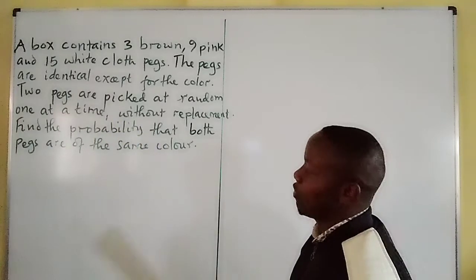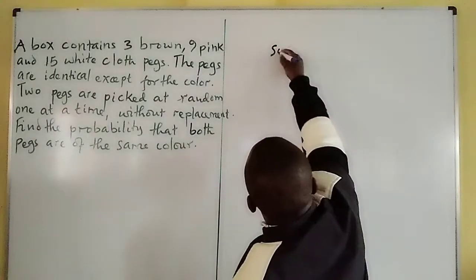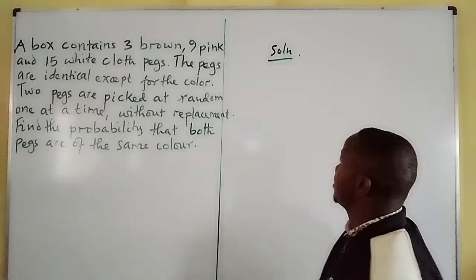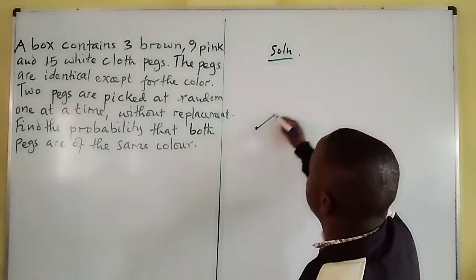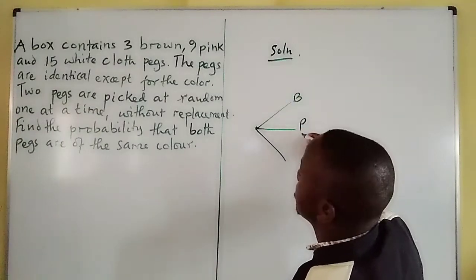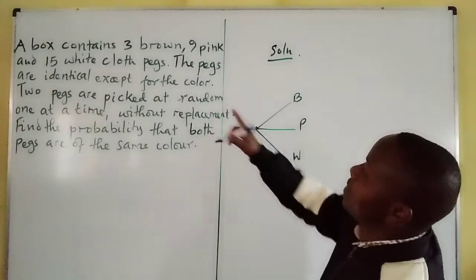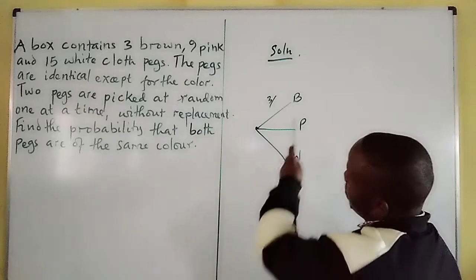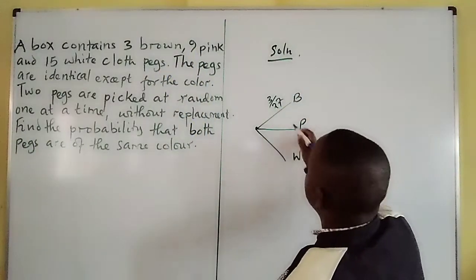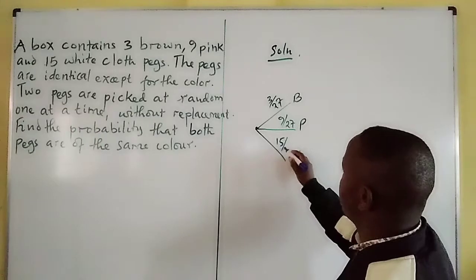We need to find the probability that both pegs are the same color. The first thing we'll do is come up with a tree diagram, which is a simplified format of outlining all the possible outcomes. The box contains brown, pink, and white pegs. Starting with brown — there are three — so the probability of picking a brown one is 3 out of 27. Picking pink is 9 out of 27, and picking white is 15 out of 27. That is the first picking.